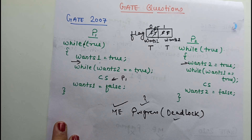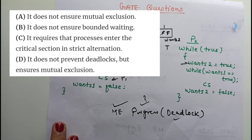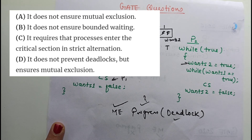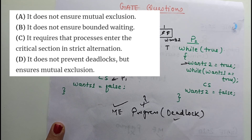So progress was shown in the normal case, but there is a situation where deadlock can happen. Looking at the options, option D is correct: it does not prevent deadlock but ensures mutual exclusion. In this way, this question has been solved.